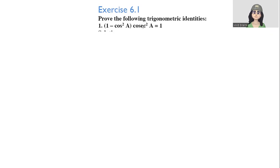First one is 1 minus cos²A into cosec²A is equal to 1. In order to prove any kind of these things, we have to take either LHS or RHS and we go on proving it. We have to get the other things.